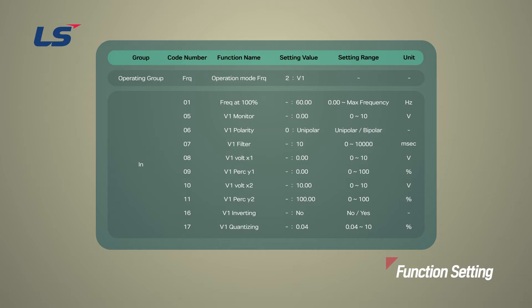You can set the time constant of filter for analog voltage inputs in ingroup 7. Parameters ingroup 8 to 11 allow you to set the range of input voltage. Here, you can set the minimum input voltage and the corresponding frequency, and maximum input voltage and corresponding frequency.